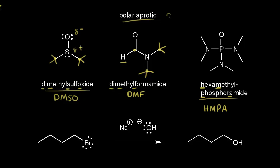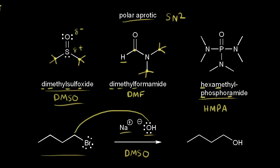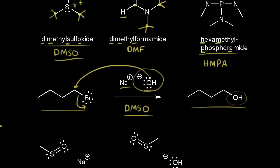Polar aprotic solvents favor an SN2 mechanism. Let's look at why. Down here I have an SN2 reaction — on the left we have this alkyl halide. Let's say we have sodium hydroxide and we use DMSO as our solvent. In an SN2 mechanism, the nucleophile attacks our alkyl halide at the same time our leaving group leaves. The hydroxide ion attacks this carbon, and these electrons come off onto the bromine to form our bromide anion, so OH replaces bromine. In an SN2 mechanism, we need a strong nucleophile, and DMSO is going to help increase the effectiveness of our nucleophile, which is our hydroxide ion.